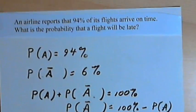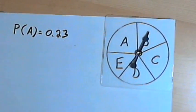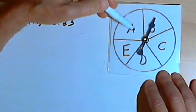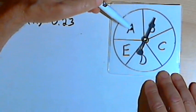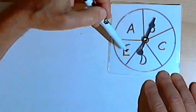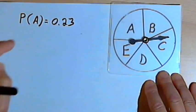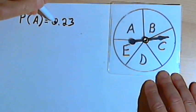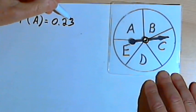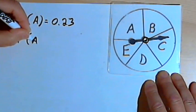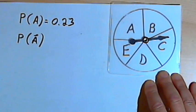Let's do a couple more examples. In this example I've got a spinner and a circle divided into five sections labeled A, B, C, D, and E. The probability of the spinner landing in section A when I spin it is 0.23. I want to find the probability of it not landing in section A — the probability of the complement of A, or A with a bar over it.